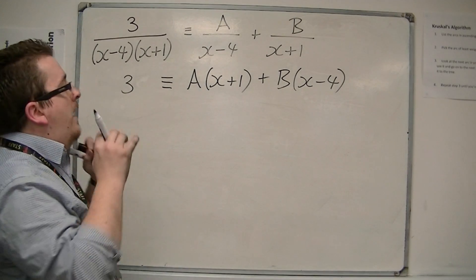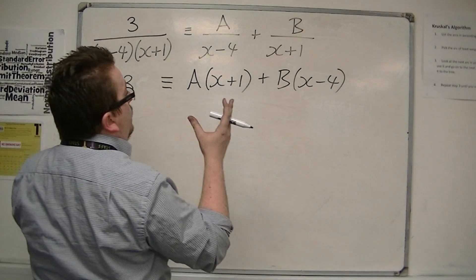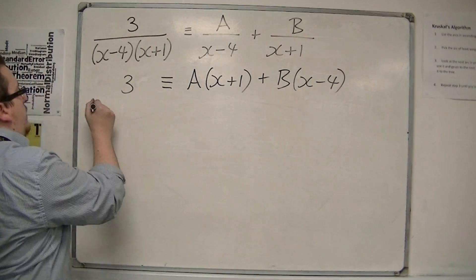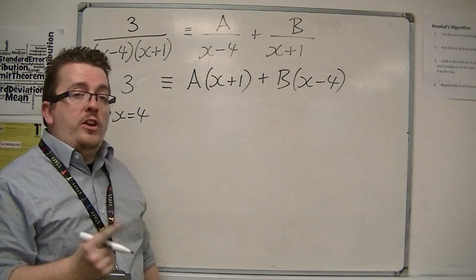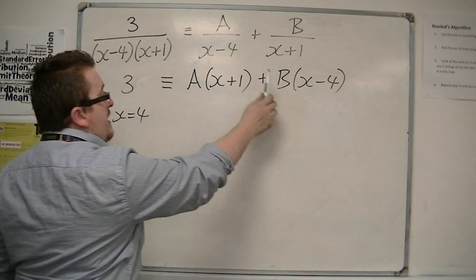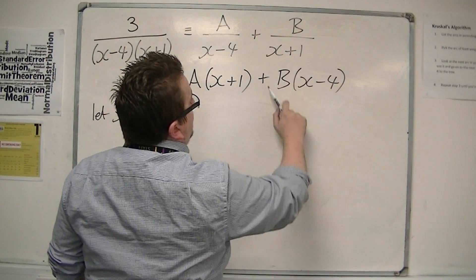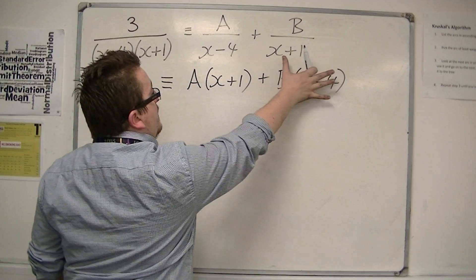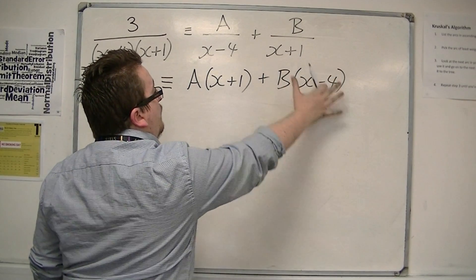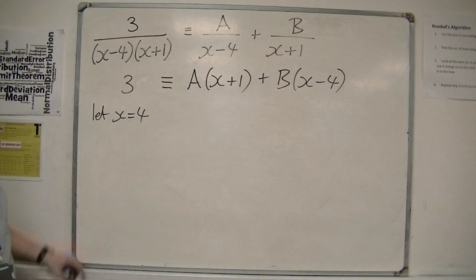So, if I use x equals 4, for example, if I let x equals 4, and why would I choose x equals 4? Well, because I know that that bracket will subsequently disappear. 4 minus 4 is 0, so that eliminates that bracket away and simplifies the problem.